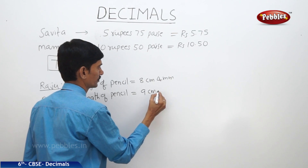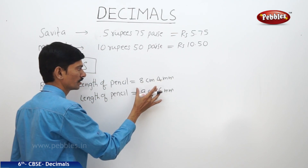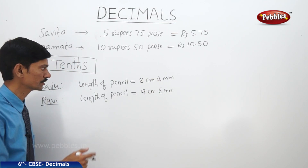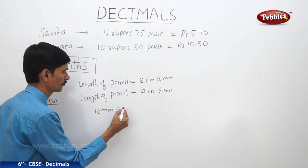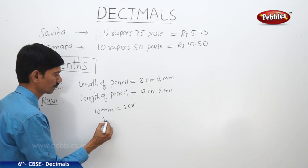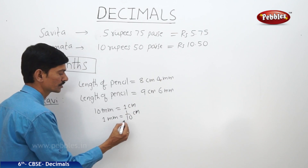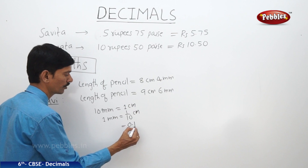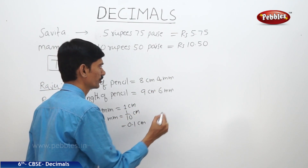The two pencils have lengths eight centimeters four millimeters and nine centimeters six millimeters. To represent these lengths as decimal numbers, we use the fact that ten millimeters equals one centimeter, so one millimeter equals one-tenth of a centimeter. This one-tenth centimeter can also be written as zero point one centimeters.